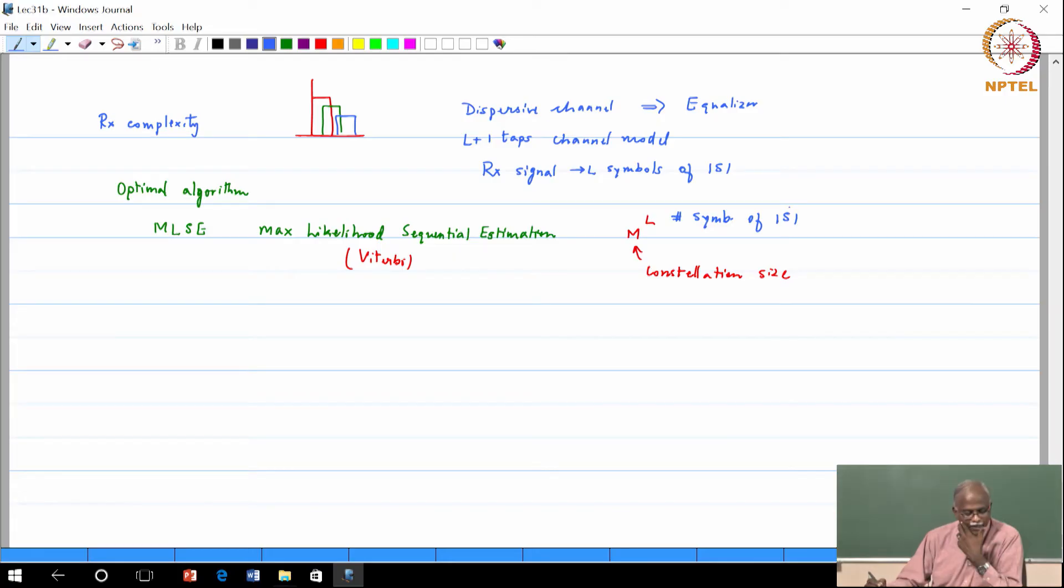So here is a simple example and we stop with that. I have a 4G system. I have a bandwidth approximately 10 megahertz. That is my bandwidth of my signal.